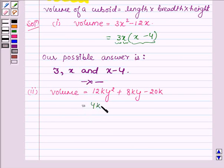Now taking 4k common from all three terms, we have 3y² left with the first term, plus 2y with the second, and minus 5 with the last.